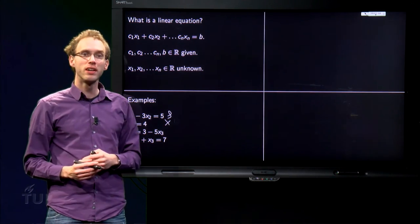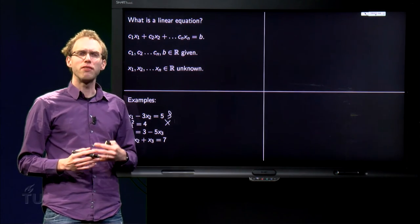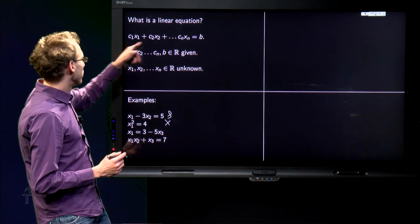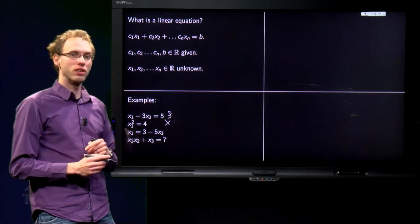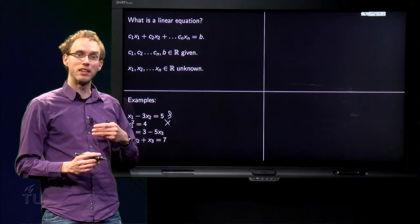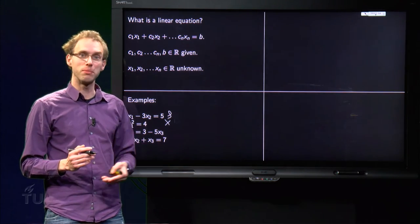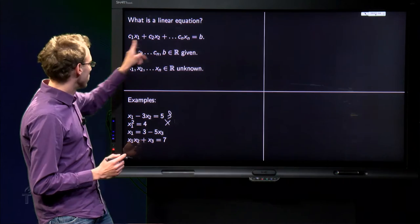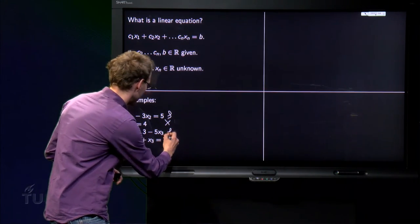Let us look at the third one, X1 equals 3 minus 5 times X3. At first sight it looks different from this, however, you can take the 5 X3 to the other side, then we get X1 plus 0 times X2 plus 5 times X3 equals 3, which is also of this form. So we have again a linear equation.